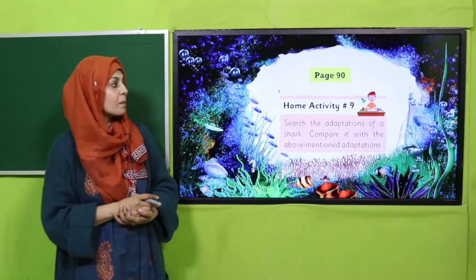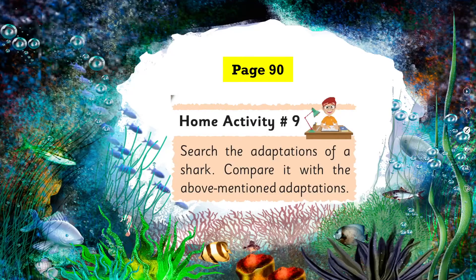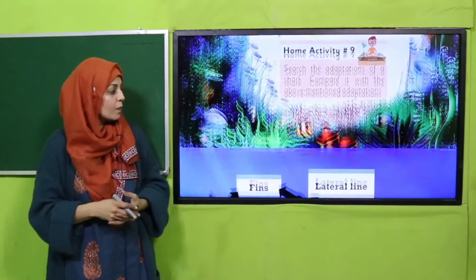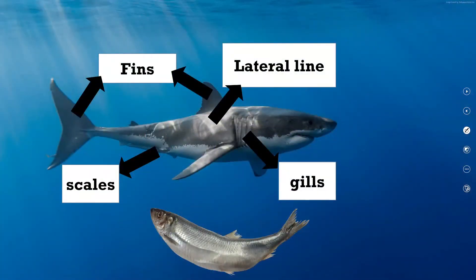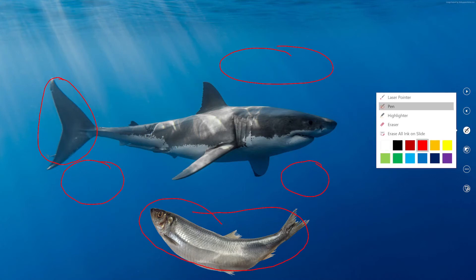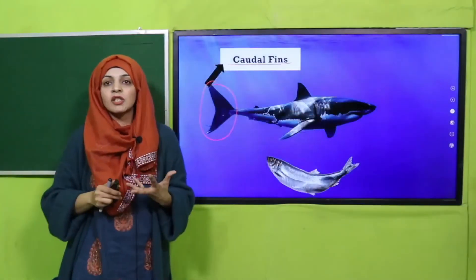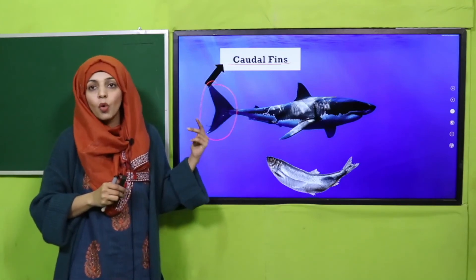Now is the time for your homework given on page number 90, Home Activity Number 9: search the adaptations of a shark and compare them with the above-mentioned fish adaptations. Here you can see a shark — it has different adaptations. We will compare it with our regular fish which has fins, scales, gills, and a lateral line. The difference is that the shark has a caudal fin — that back fin helps it in extremely fast movement, whereas the normal fish has a regular fin.